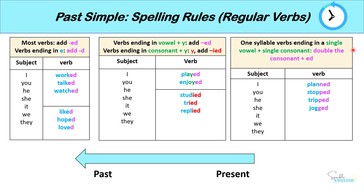Now the next rule is that one syllable verbs ending in a single vowel plus a single consonant, we have to double the consonant and add ED. So plan becomes planned with a double N, because this is a one syllable verb ending in a single vowel and a single consonant. Stop becomes stopped with double P. Trip becomes tripped, double P. Jog becomes jogged, double G.